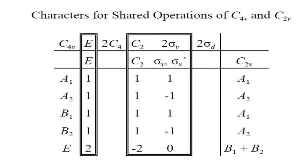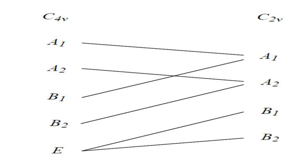Reading the correlation carefully: A1 of C4v and B1 of C4v correlate to A1 of C2v. A2 of C4v and B2 of C4v correlate to A2 of C2v. E of C4v correlates to two irreducible representations: B1 and B2 of C2v. The correlation diagram shows: A1 and B1 of C4v → A1 of C2v; A2 and B2 of C4v → A2 of C2v; E of C4v → B1 and B2 of C2v.